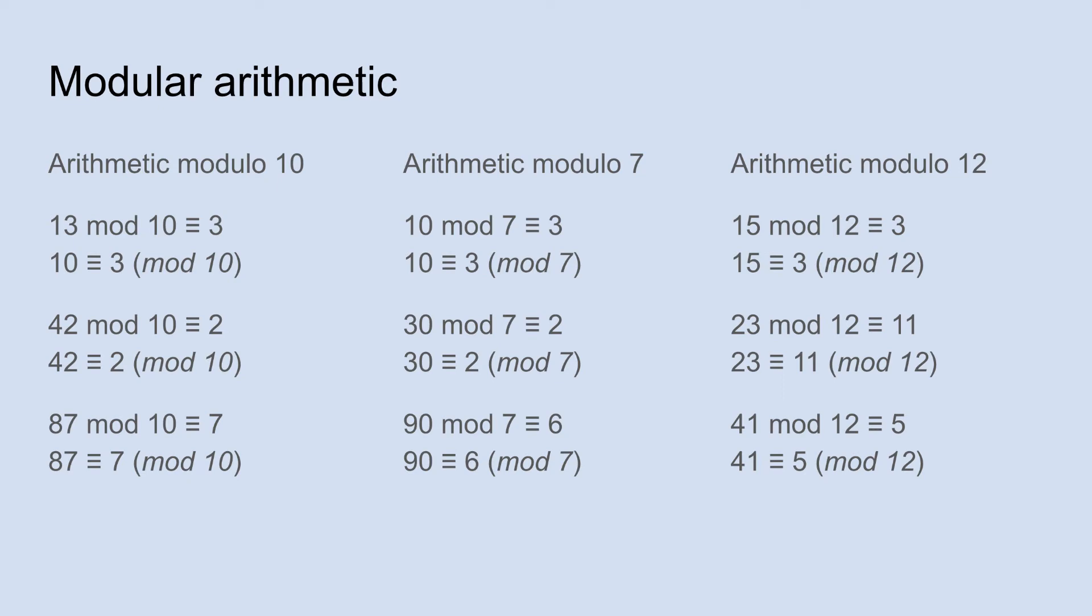Now you notice I use a symbol there that is very common with modular arithmetic, which is the 3 bars. And it's sometimes said as equivalents. So 13 mod 10 is equivalent to 3. Or you could also write it as 10 is equivalent to 3, and then put the mod 10 in brackets.